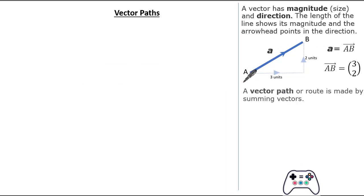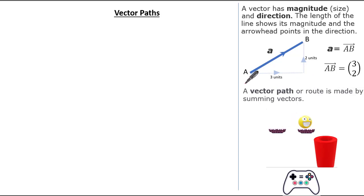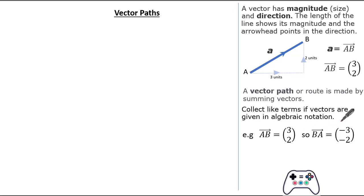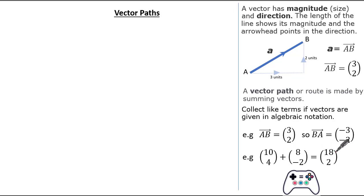So what is a vector path? A vector path is a route or path made by summing up vectors. Think about our little character jumping, then jumping to the right, and then moving to the right — it's a summation of our vectors. To work out a vector path, it's important that you know how to collect like terms if vectors are given in algebraic notation. It's important to remember reversing the direction of a vector also changes its sign. For example, vector AB is 3, 2, so vector BA is minus 3, minus 2. And if a vector is given in component form, remember the sum of the horizontals gives the resultant horizontal, and the sum of the verticals gives the resultant vertical.